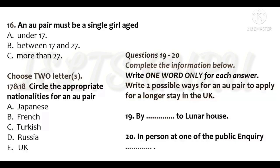If an au pair wishes to stay longer than the time stamped in her passport, she may apply either by post to Luna House, Croydon, or in person at one of the public inquiry offices. If she applies by post, it is a good idea to send any valuable documents by recorded delivery post. She should apply before the time limit on her permitted stay runs out. She must show that the arrangements are still those of an au pair. She may change host families during her time in the UK, providing that the new arrangements are also those of an au pair.